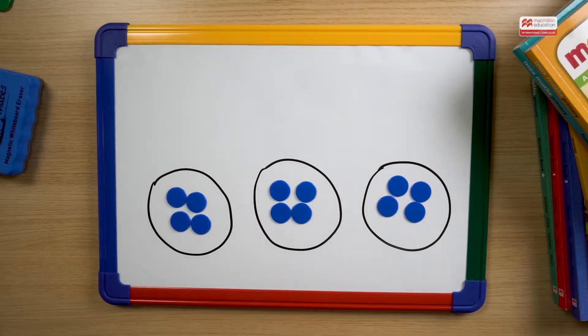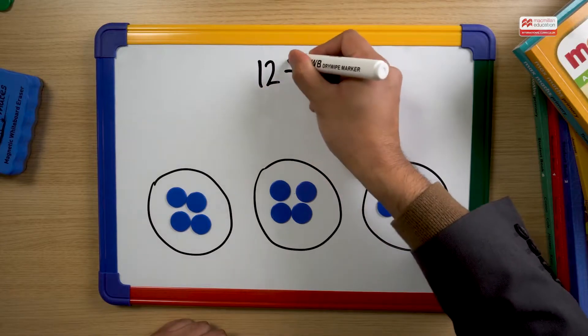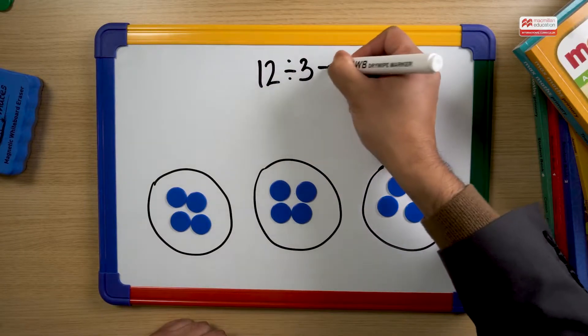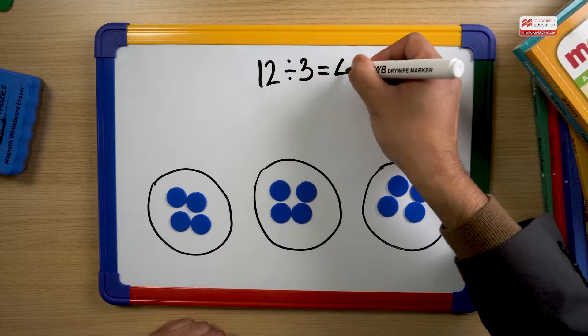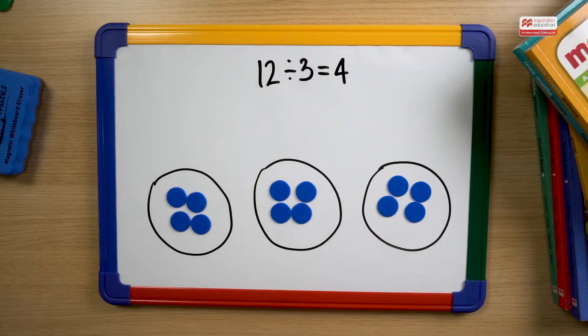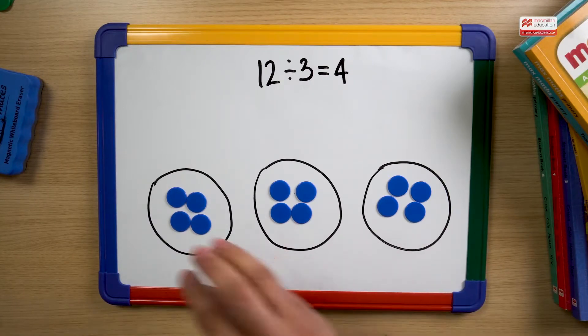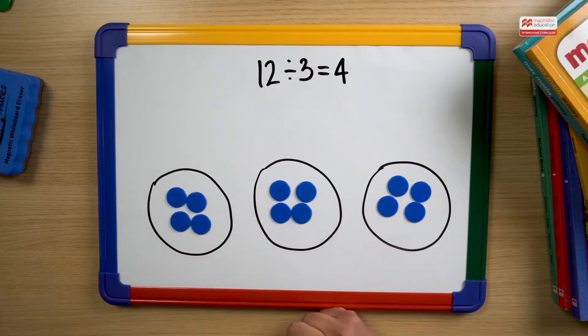And here you can see 12 divided by three is equal to four. Twelve counters shared amongst three baskets is equal to four in each basket.